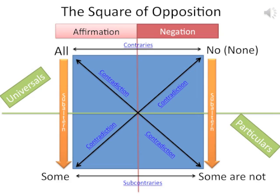The last concept to discuss is subalternation. Subalternation is the ability to take a universal statement — a universal quantifier — and draw a particular conclusion from it. So from 'all dogs are furry,' we can naturally move down to the particular instance 'some dogs are furry.' Both are truthful statements. The particular quantifier 'some' is the subaltern of 'all.' Similarly, 'some are not' is a subaltern of the universal quantifier 'none.'